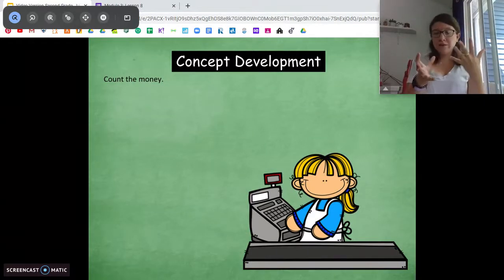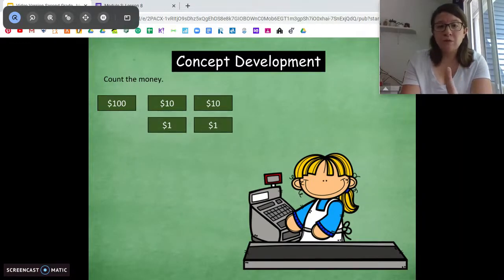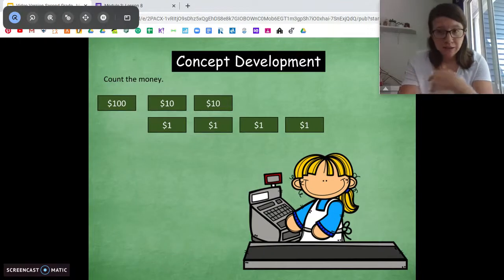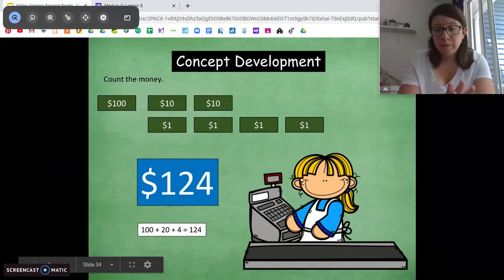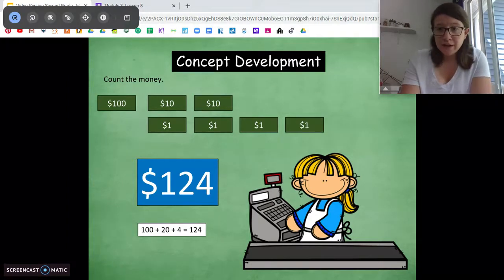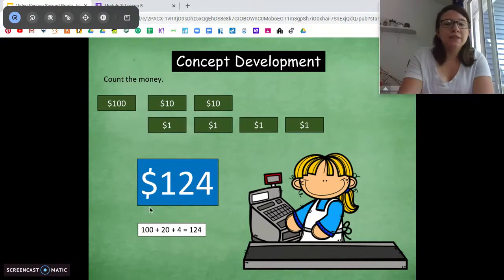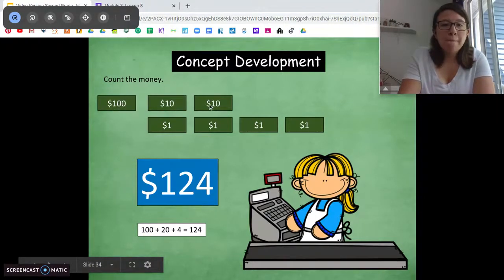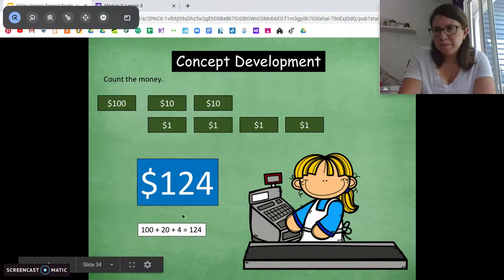All right. Now, we're going to mix all of our different values together and count up to 124. So, we're going to start with $100, 100, 110, 120, 121, 122, 123, 124. Now, this is money, so we have to make sure we say $124. We can put this little dollar sign in there. You're doing the same thing that you've been doing with your 10s and 1s. You're just transferring it into money. 10 ones still equal a 10, 10 tens still equal a 100, just putting the money in front of it. So, you can see this little addition problem down here. We have 100 plus our two 10s for 20 plus our four 1s for 124. What's this called again when we break down our number into an addition sentence? What form is that? Expanded form. Very good.